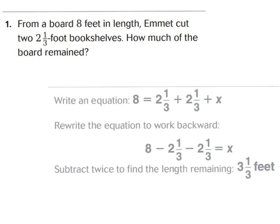You can write an equation to work this out in your mind. You can say: two and one-third plus two and one-third plus what amount equals eight wholes? But to really get that unknown amount, you're going to have to work backwards. You start with what you know — your eight wholes. Subtract two and one-third, get a value, then subtract another two and one-third, and that'll give you what's left over: three and one-third feet.